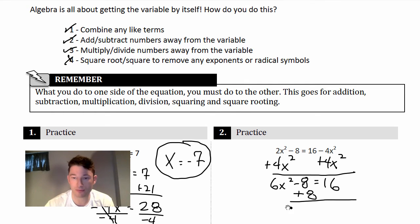So we get 6x² = 24. Okay, what do we do now? Multiply, divide numbers away from the variable. So divide by 6, divide by 6, and we get x² = 4.